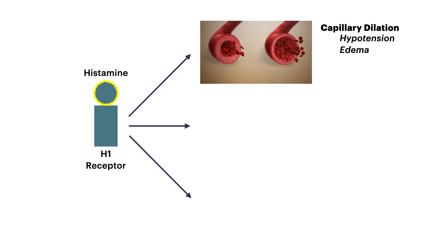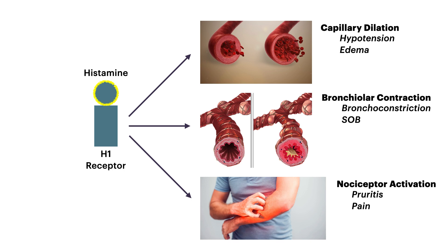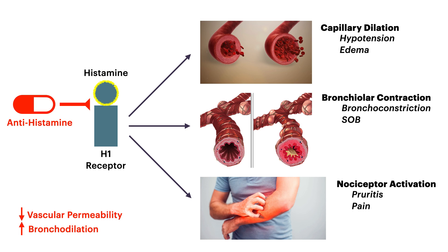One: capillary dilation causes hypotension and vascular edema. Two: bronchiolar contraction causes bronchoconstriction and shortness of breath. And three: the peripheral nociceptors or pain receptors are activated, which causes pruritus or itching and pain. The reason we use antihistamines is because we want to prevent this. So if we prevent capillary dilation, prevent bronchiolar contraction, and prevent the activation of nociceptors, the net effect is to decrease vascular permeability, increase bronchodilation, and decrease itching and pain.